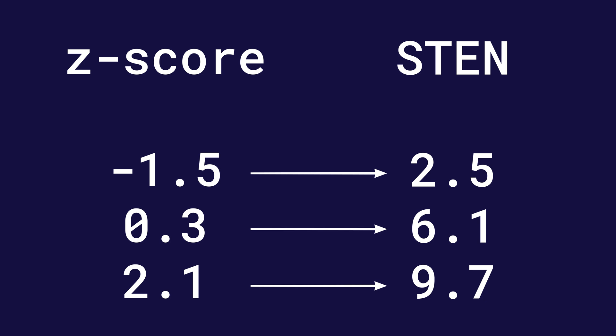So minus 1.5 becomes 2.5. A Z score of 0.3 is 6.1 — remember, the average on this scale is 5.5 — whereas a high Z score of 2.1 becomes 9.7, clearly on the higher end towards that top number of 10.